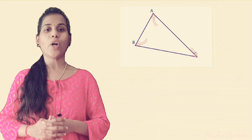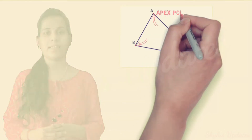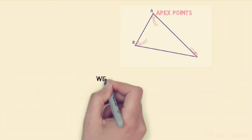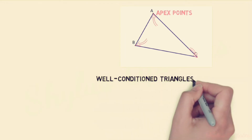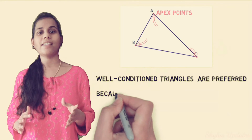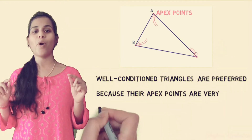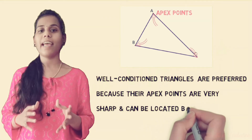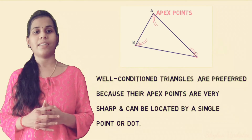These points are called Apex Points. Well-Conditioned Triangles are preferred because their apex points are very short and can be located by a single point or dot.